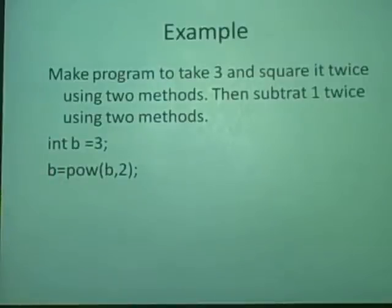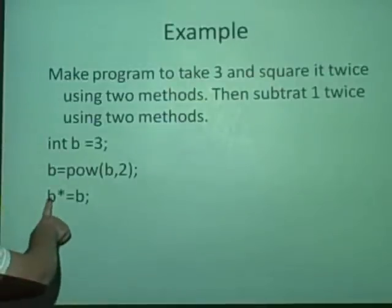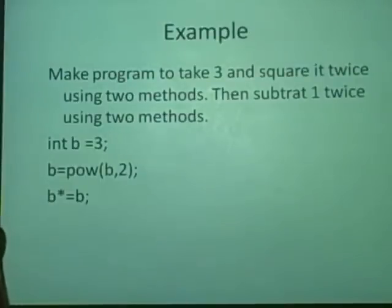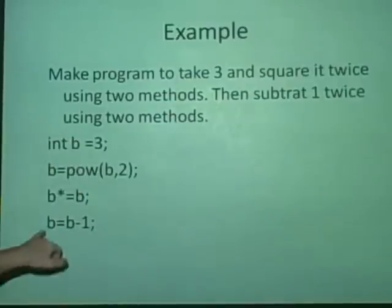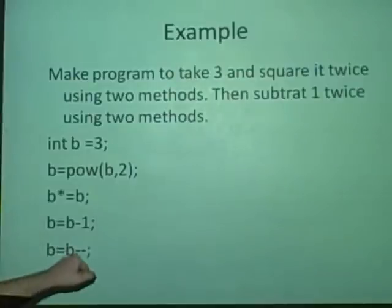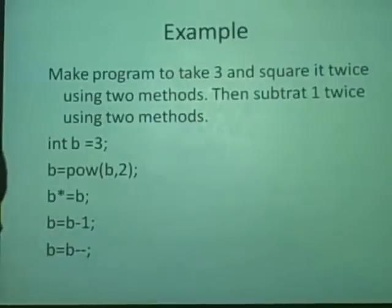Next we want to do it again, so what we'll use is B times equals B. So what this is doing is let B be multiplied by what's on this side. So now it's B times B. So this will be 81. So now we want to subtract one. We can do B minus equals one. That will subtract one. Here I've done instead B equals B minus one. That's just the same. You can see what's happening, it's replacing the value B with B minus one. And also this B minus minus, we've used that here. So because it's B minus minus, that means subtract one. So we've subtracted one here and here. So that should work perfectly.